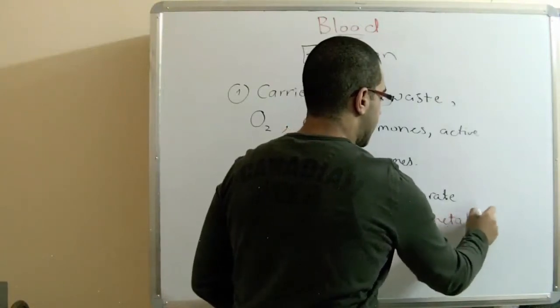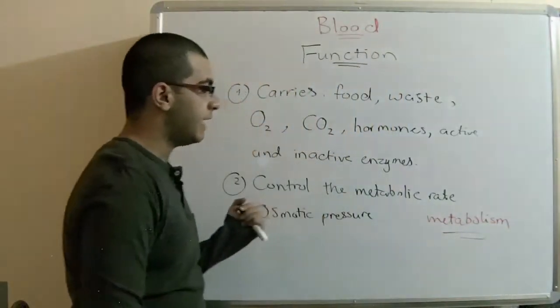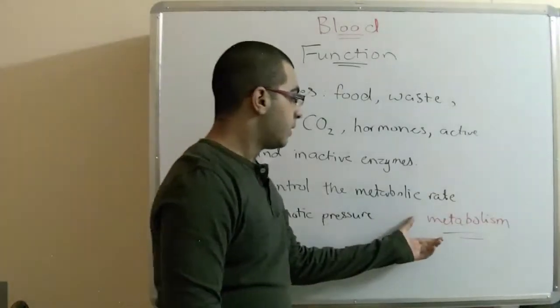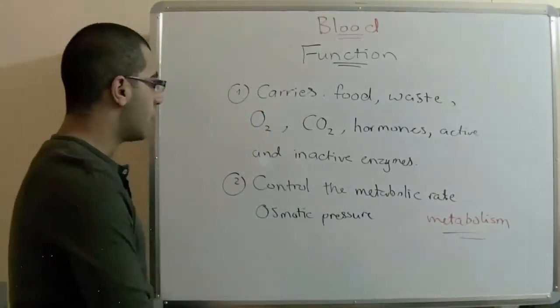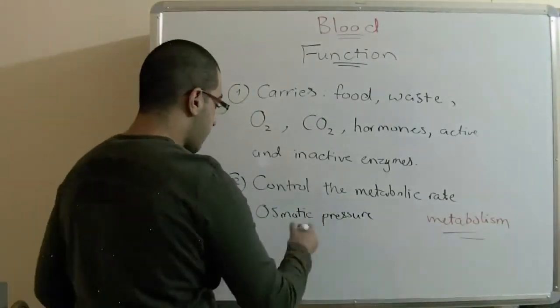And as we mentioned in the metabolism video at the end of the digestion, the end of chapter 1, the metabolism is making use of the absorbed food. So it controls this metabolism by controlling the osmotic pressure.